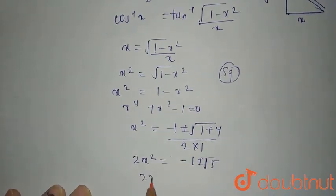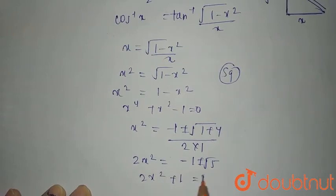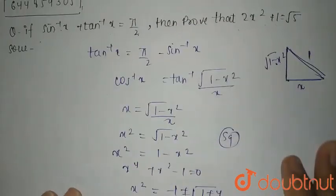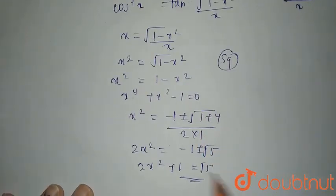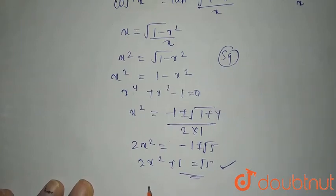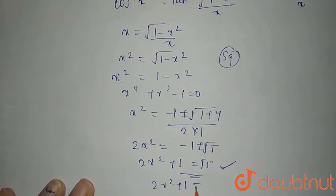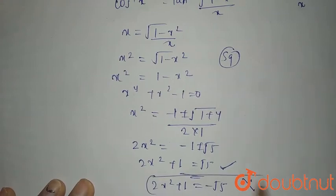So 2x square plus 1 equals root 5. We were given that 2x square plus 1 equals root 5, which we needed to prove. Here it is plus minus root 5. We have taken plus root 5 as 2x square plus 1 equals minus root 5 is not possible.